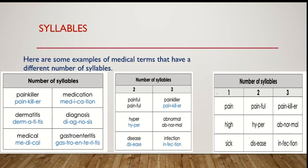Number of syllables: 'pain' — one syllable. 'high' — one syllable. 'sick' — one syllable. 'painful' — two syllables. 'hyper' — two syllables. 'disease' — two syllables. 'pain-ful-ness' — three syllables. 'abnormal' — three syllables. 'infection' — three syllables.